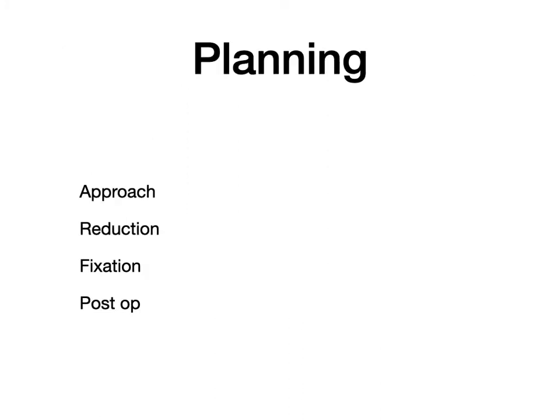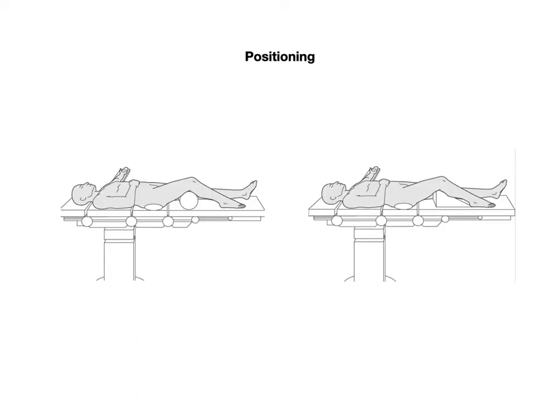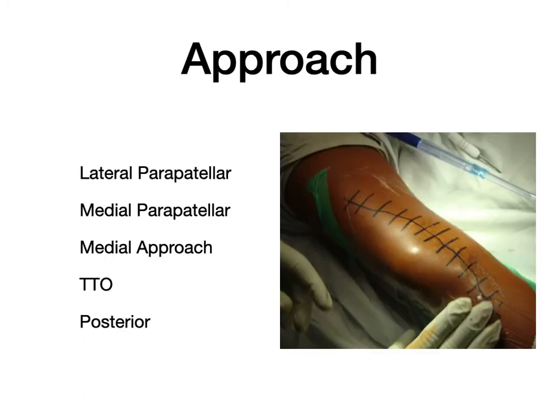When planning surgery, think about approach, reduction steps, fixation, and post-operative care. Positioning is on a standard translucent table; a triangular radiolucent aid helps with intra-operative X-rays. The approach depends on the fracture type. The commonest approaches are lateral parapatellar, medial parapatellar, formal medial approach, tibial tuberosity osteotomy, and posterior approach.